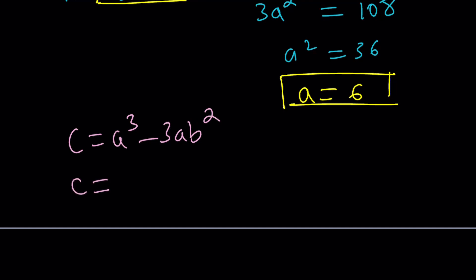So C is going to be 6 cubed, which is 216 minus 3 times A, which is 6 times B squared, which is 1. 216 minus 18 is 200 minus 2. Think about it. 198. And that will be the value of C. So from here, we basically got the value of C as 198.